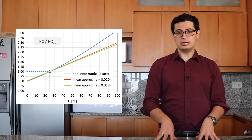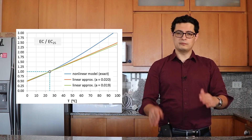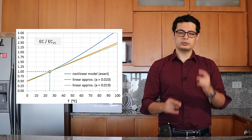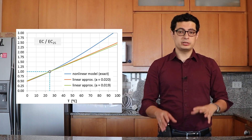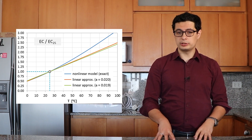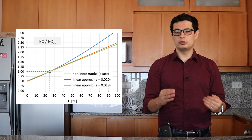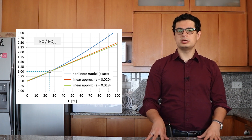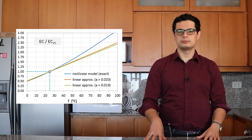There are some linear approximations that work well in very narrow temperature ranges, but in the range we use in hydroponics you still pay a small penalty in accuracy if you use linear approximations.